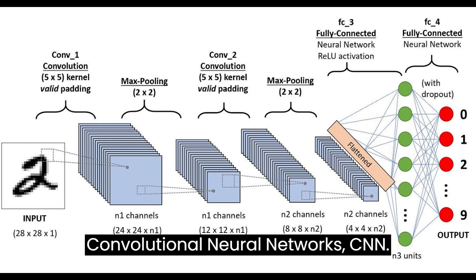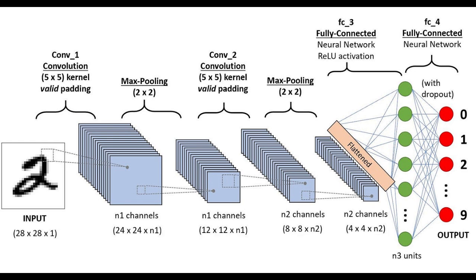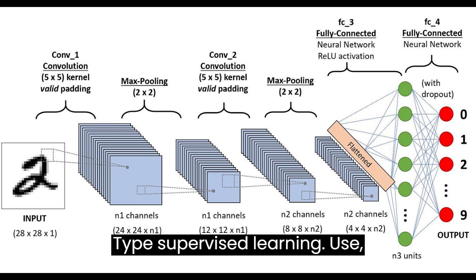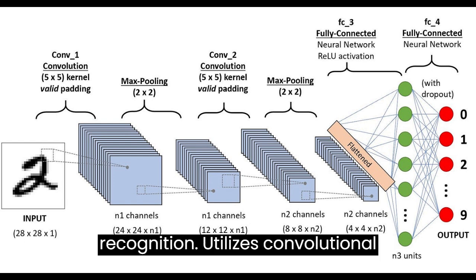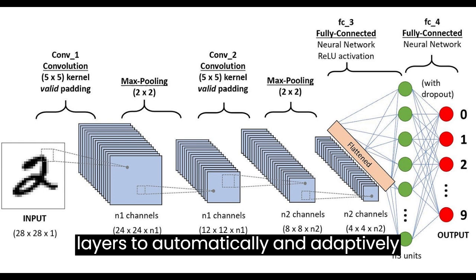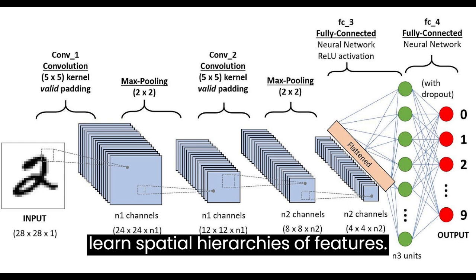Convolutional Neural Networks (CNN). Type: supervised learning. Use: specialized for image processing and recognition. Utilizes convolutional layers to automatically and adaptively learn spatial hierarchies of features.